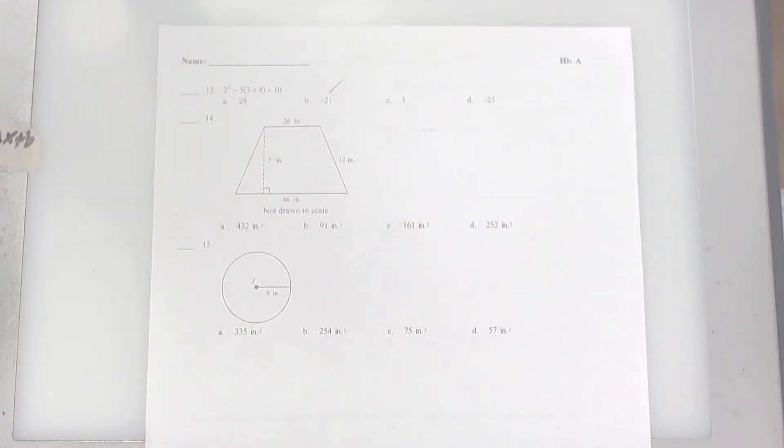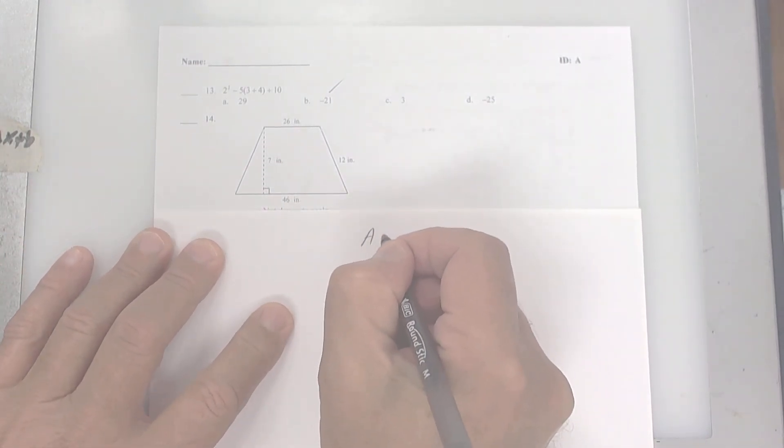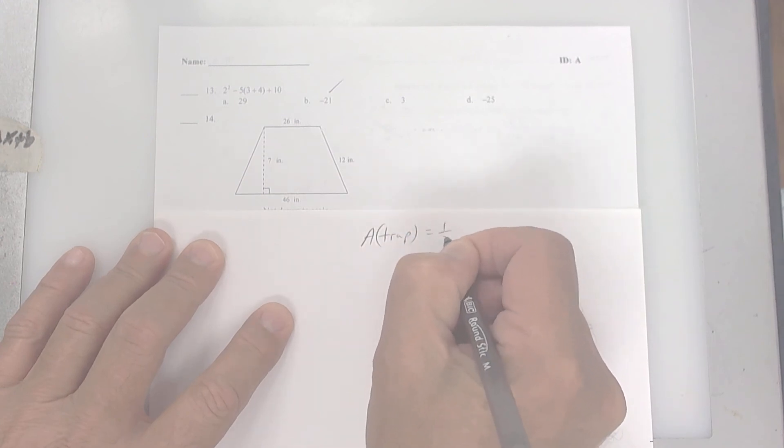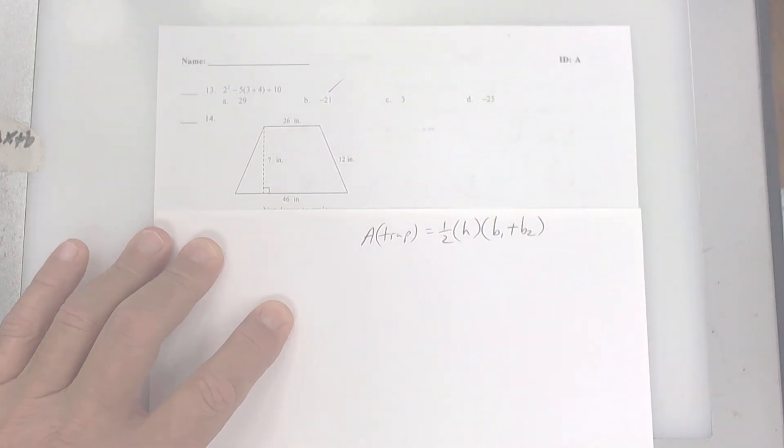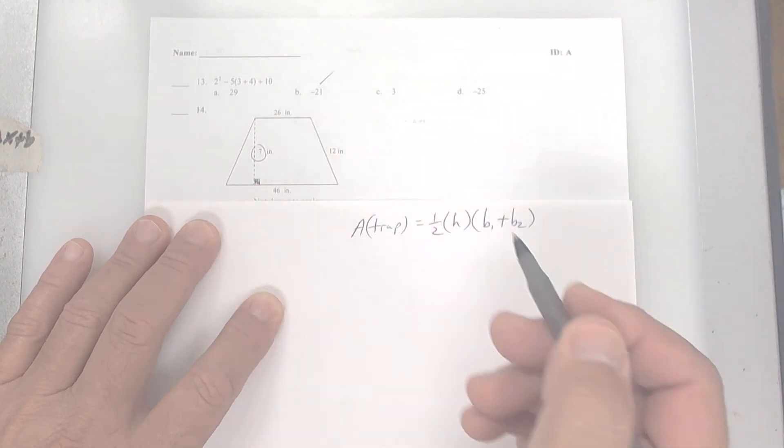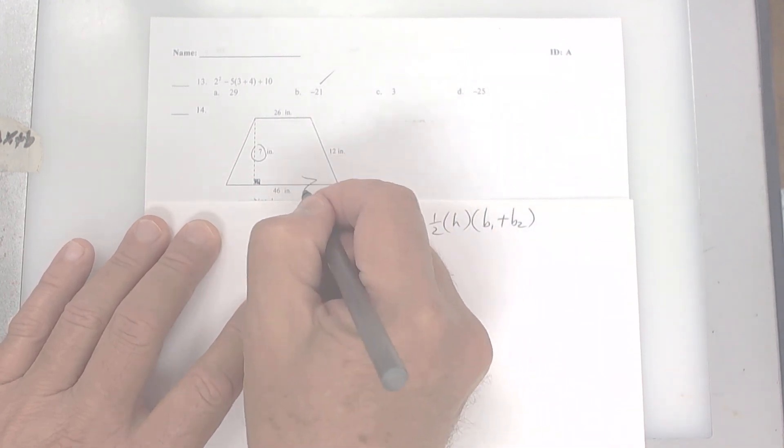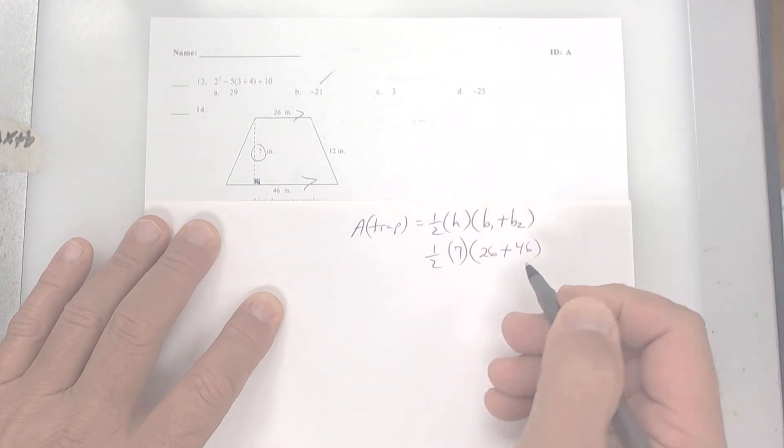This next one right here is a trapezoid. And the formula for a trapezoid, area of a trapezoid, is right there. So the height, remember, color the box. That's your height right here. This is your base. The bases are parallel. So it's 1 half the height times the sum of the two bases. So it's 26 plus 46. I'm going to do the parentheses first. I would divide last.